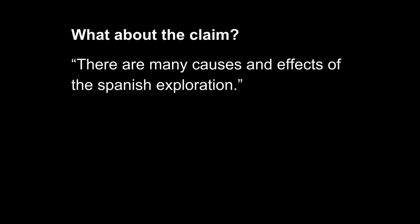First, we have to talk about the claim. The claim may be considered the topic sentence — it is the controlling idea of the answer. In a larger piece of writing, it will be called the thesis. Currently, the student has written: There are many causes and effects of the Spanish exploration. The problem with this claim? It is vague. Vague means unclear, open to interpretation — information is missing. This topic sentence, this claim, doesn't really tell me anything about what the student will write. And a claim must.